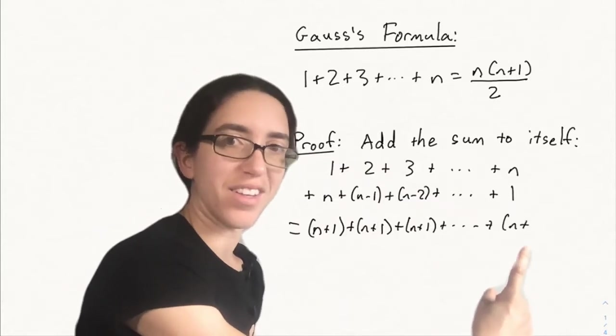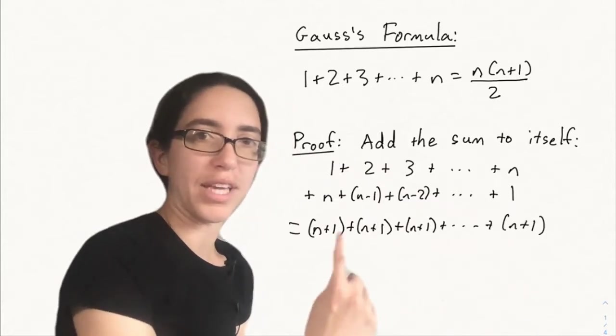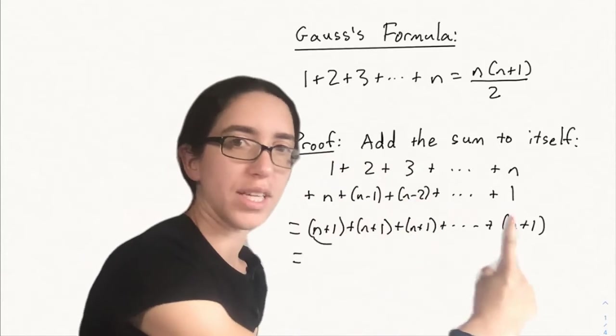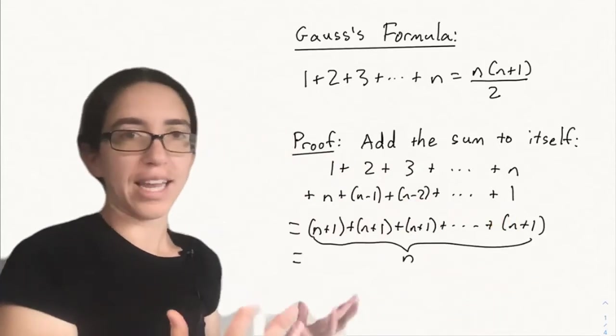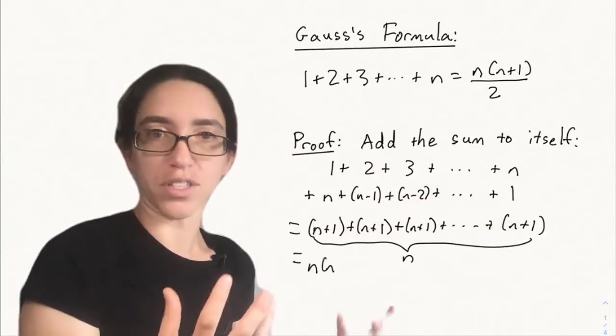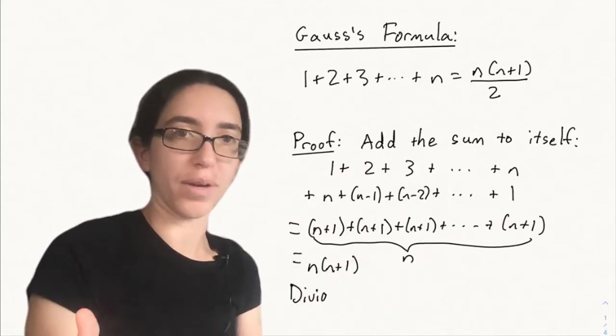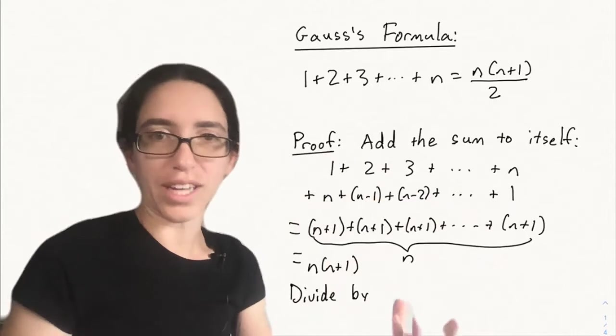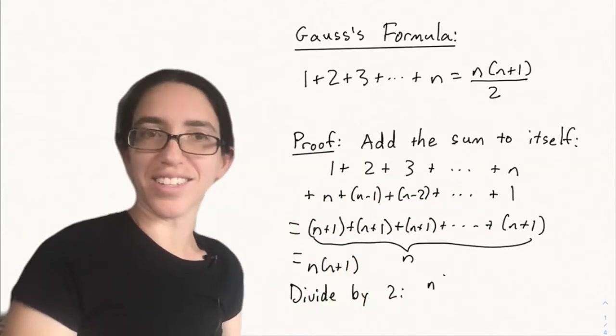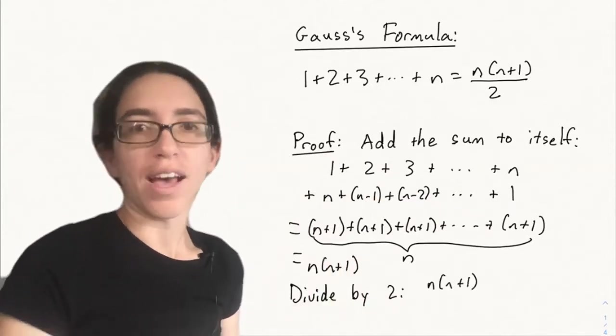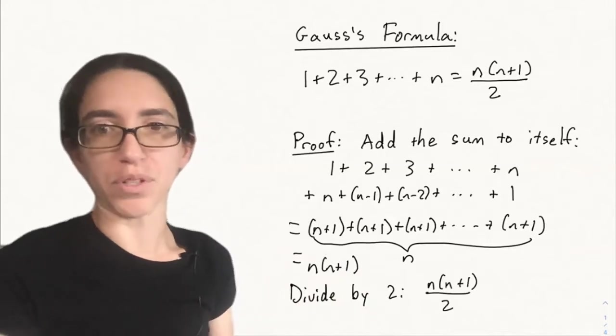And how many n plus ones did we get? Well there are n numbers in the sequence one through n, so there are n n plus ones in our final result. So the final total summation here is n times n plus one, but we added the sum to itself twice, so we want to divide by two in the end to get the answer that we were looking for. And that's how you get the formula n times n plus one divided by two.